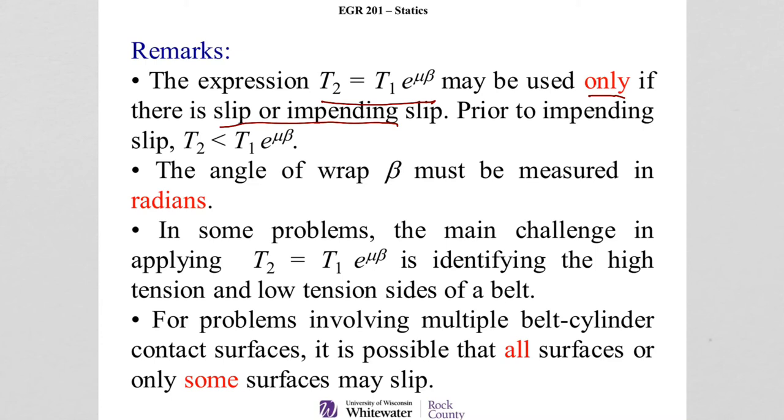The angle of wrap beta must be measured in radians. And that's a huge problem that students typically get. And in some cases or some problems, the main challenge of applying this is really identifying which is the high side of the tension.